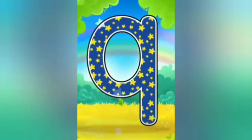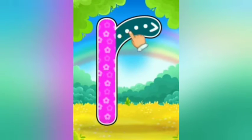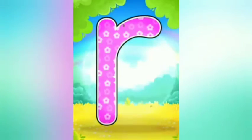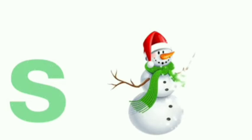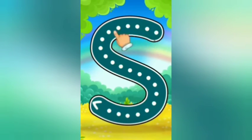Small letter R. R is for rose. See the formation: make a standing line and now make a little curve. Small letter S. S is for snowman. See the formation: make a curve and again make a curve.